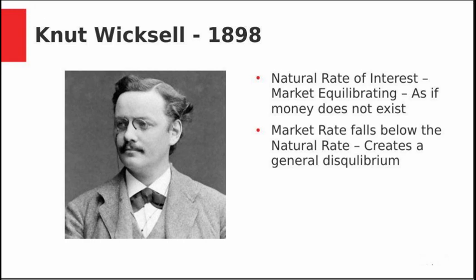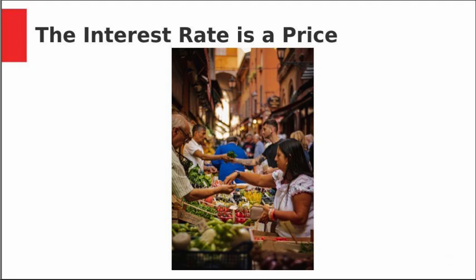Great ideas are often forgotten. The key idea is Knut Wicksell's natural rate of interest from 1898 — the market-equilibrating rate, as if money didn't exist, where supply and demand bring a market into equilibrium. When this natural rate is above the market rate of interest, a disequilibrium forms. The Federal Reserve pushed the market rate of interest so low — in today's terms, the Fed funds rate; back then, the reserve ratio and discount rate. This created a general disequilibrium. Wicksell was explaining price movements in the 1800s; this was then developed into a business cycle theory by Mises and Hayek. The interest rate is a price — a price of money, or at least a proxy for credit.